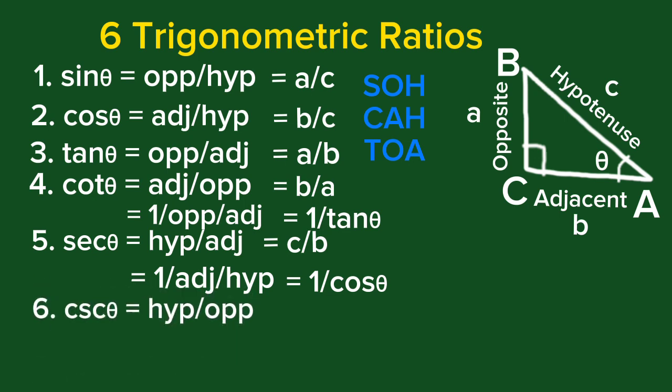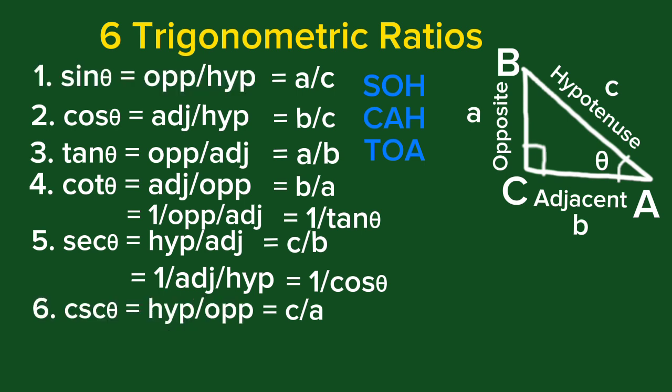The last one: cosecant theta is hypotenuse over opposite, that is C over A. Let's compare this to sine theta. Cosecant is a reciprocal of sine theta. That is 1 over (opposite over hypotenuse), and this is 1 over sine theta.